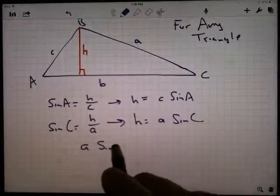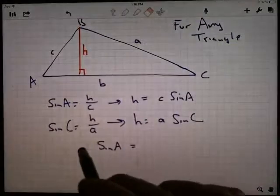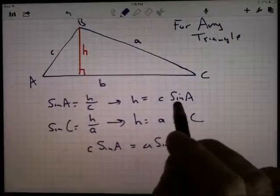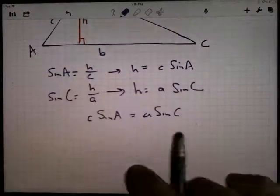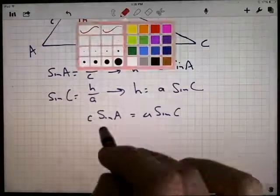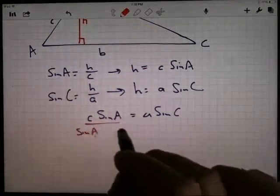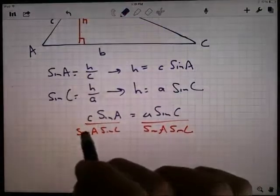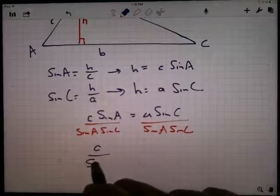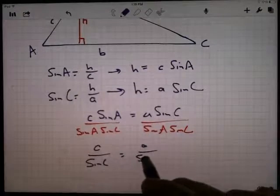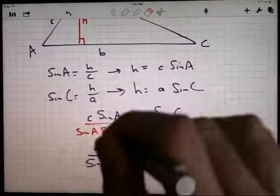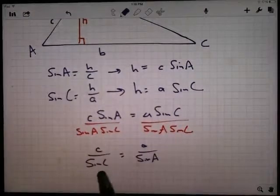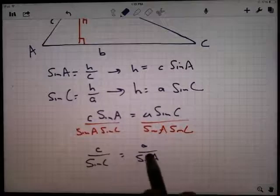This is c times the sine of A is actually equal to a times the sine of C. There we go. This one equals that one. Now I'm going to divide both sides here by both of those sines. So I'm going to divide by sine A and I'm going to divide by sine C. And as I do that, the sine A's will cancel out. So I've got c over sine C on this side, and I've got a over sine A on that side. Each fraction here has the sine of an angle and an opposite side.